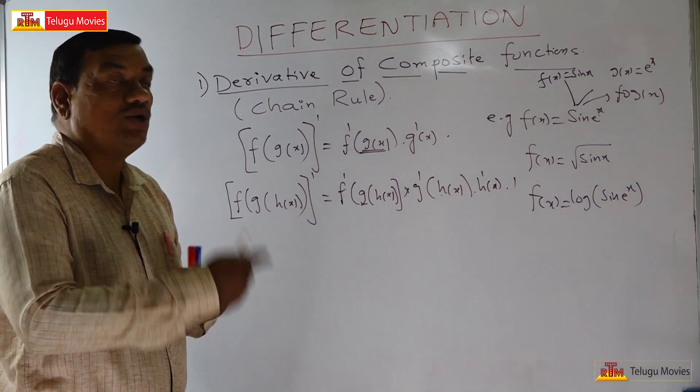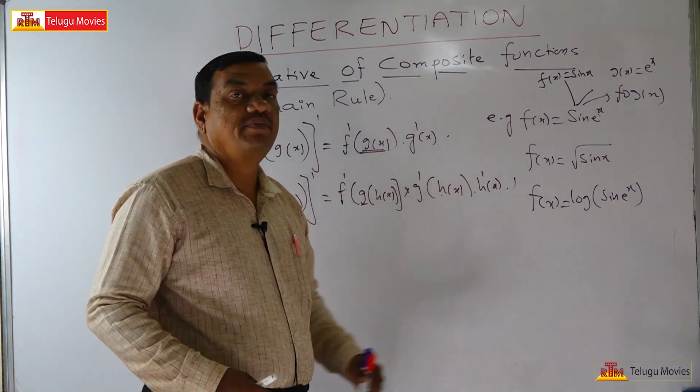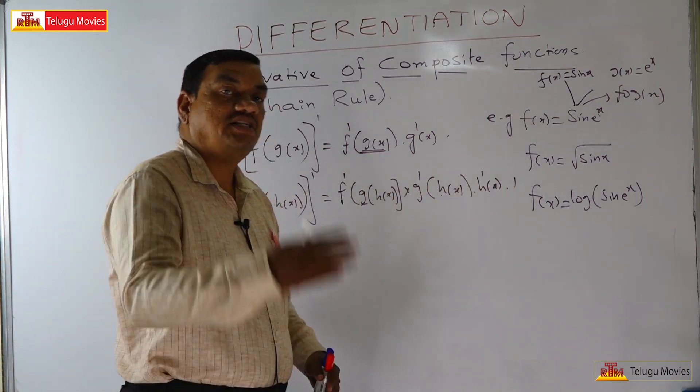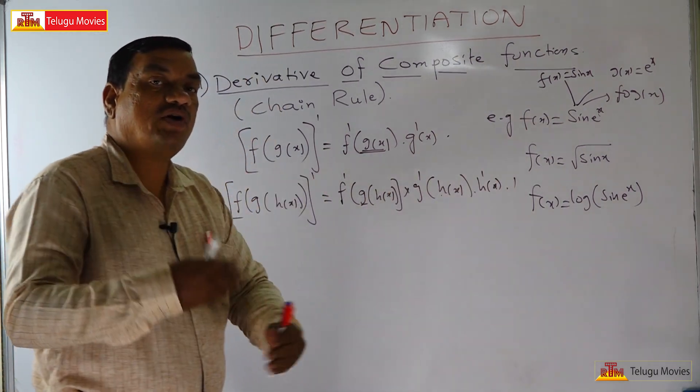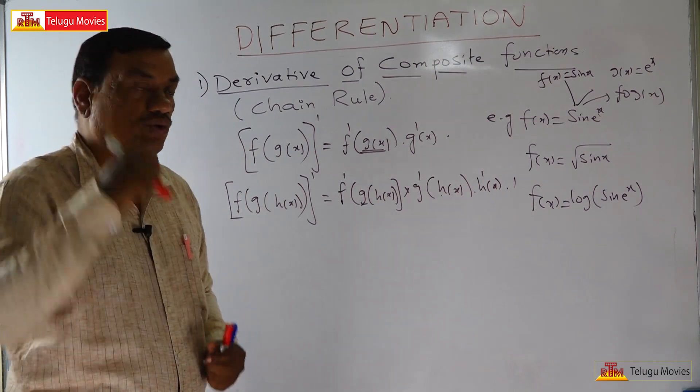This is the way of finding the derivative of composite functions. This is called the chain rule — just like a chain, one by one we continue.